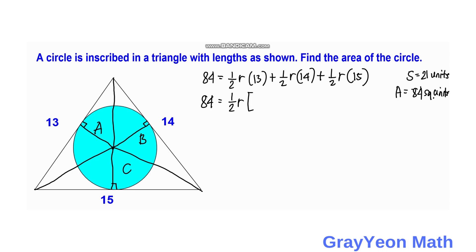We can factor out 1/2 R, leaving inside the parenthesis 13 plus 14 plus 15. Adding this gives 42. Then 42 divided by 2 becomes 21.